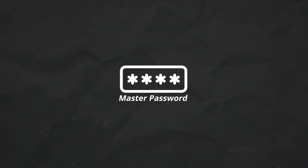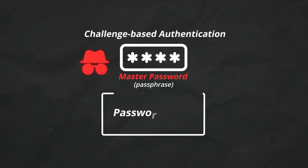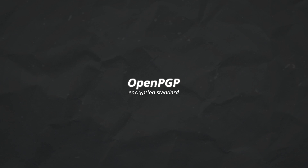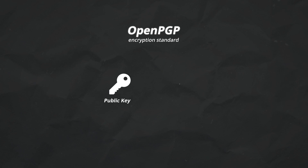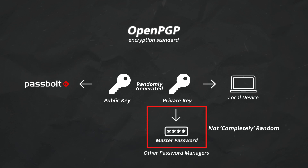Here is how it works. Like most password managers, Passbolt does accept and create a master password, but this acts more as a passphrase and doesn't control overall access to the platform. Instead, Passbolt uses challenge-based authentication to provide access. So if someone theoretically were to steal your master password, they still couldn't get into your Passbolt vault. Passbolt uses the OpenPGP encryption standard to achieve this — OpenPGP creates a public-private key pair where both keys are randomly generated. The private key is only stored on the local device and never leaves that device, while the public key is given to Passbolt.